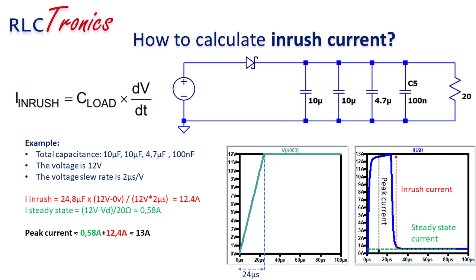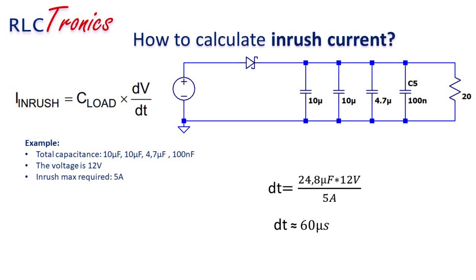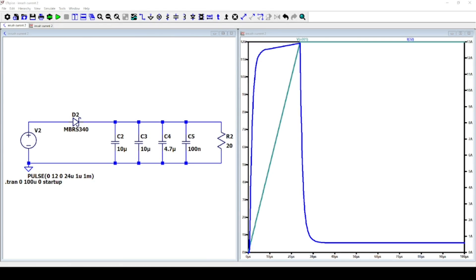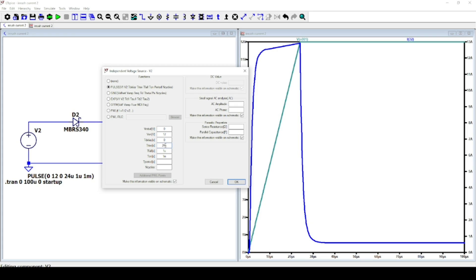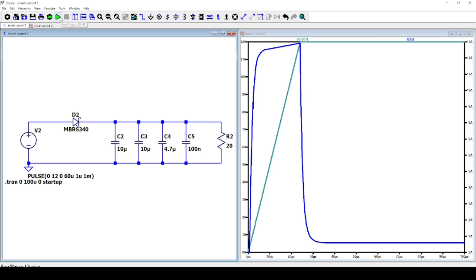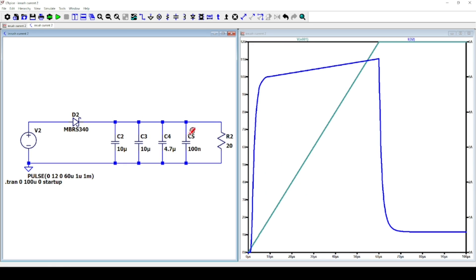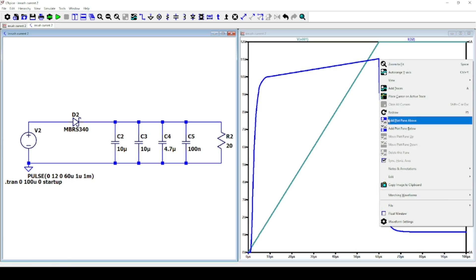The peak current in this case is the total of the inrush current and the steady-state current. Now, if you realize that the inrush current should not exceed 6A to stay within the limit of your PCB tracks and input diode, you can increase the rise-up time to reduce inrush current. Let's figure this out on LTSpice simulation — changing the rise-up time to a total of 60 microseconds. As you can see, the peak current has been reduced from 13 amperes to 5.5 amperes approximately.